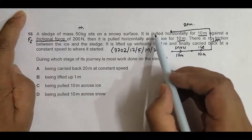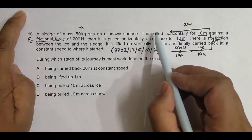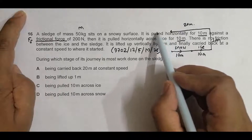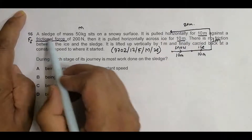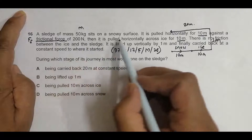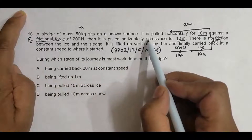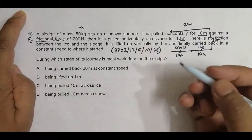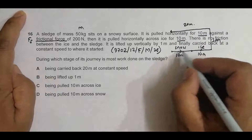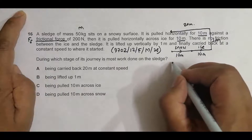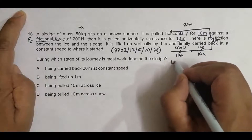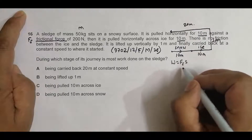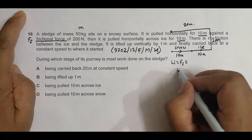Since nothing has been stated otherwise, we assume that the pulling of this body against the frictional force is occurring at uniform velocities. So the work required here is: Work equals frictional force multiplied by displacement.